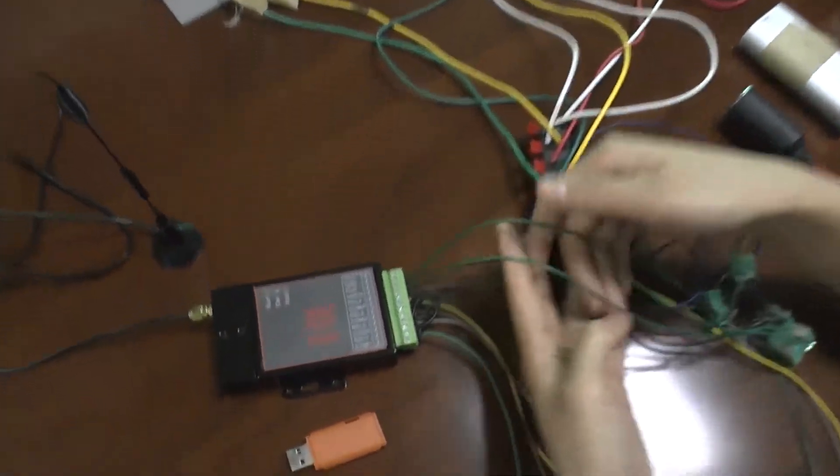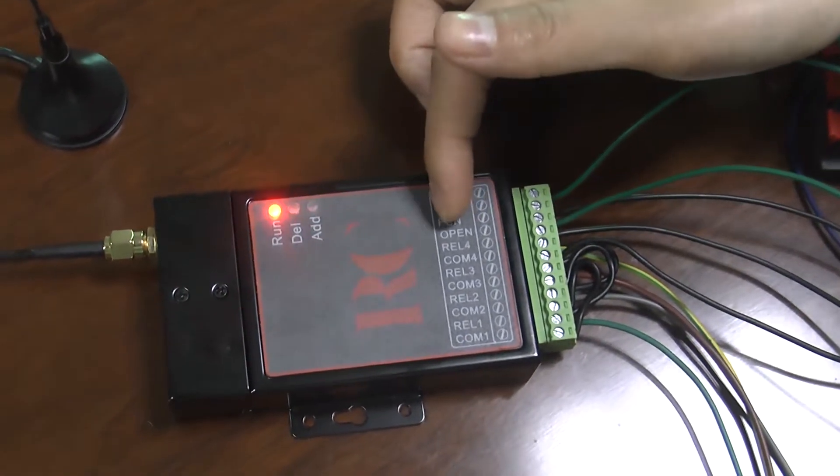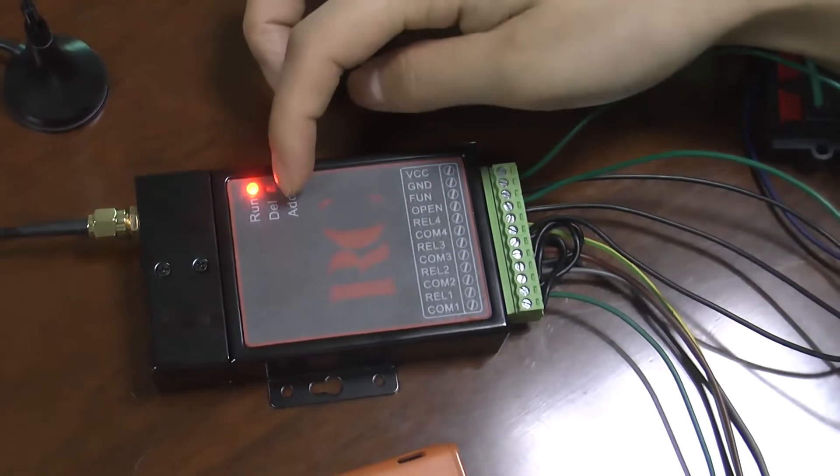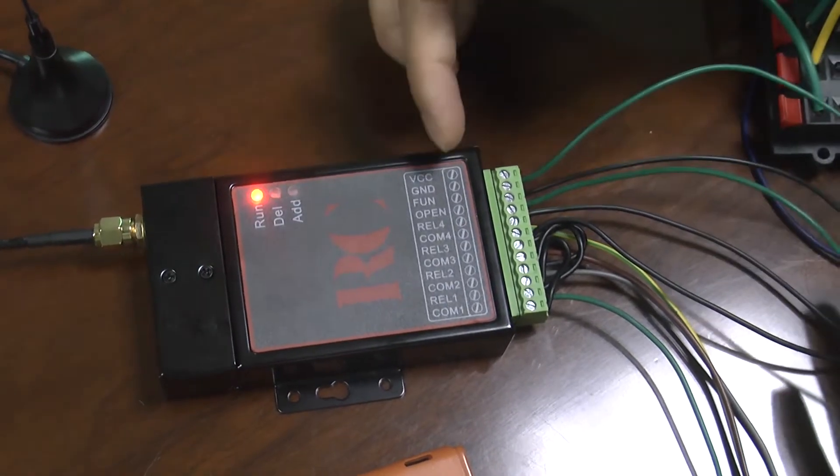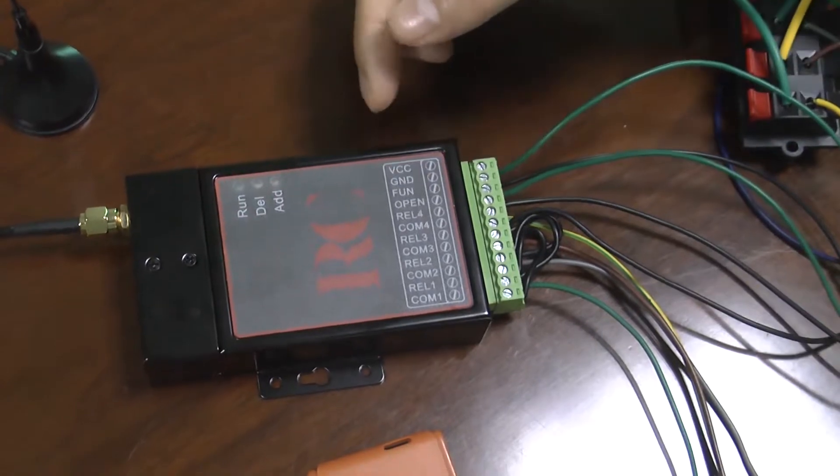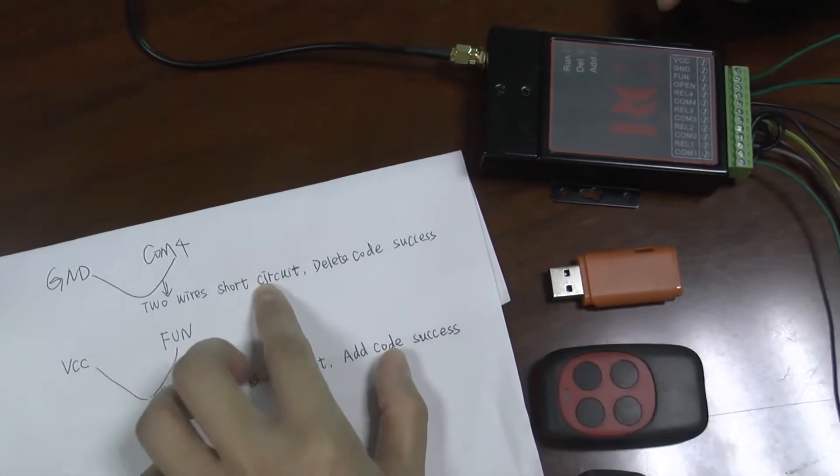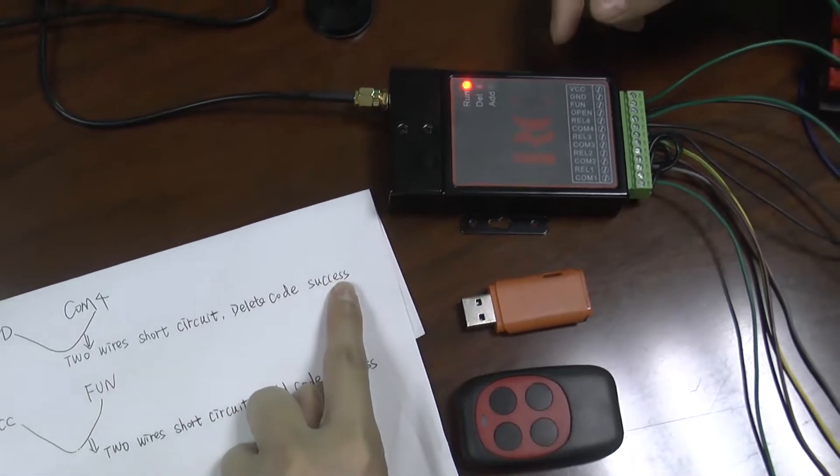Please see these two lines of function: connection with VCC and FUN. If you want to delete the code, please connect the GND and the common wire. Connect these two lines for a short second and the deleted code succeeds.